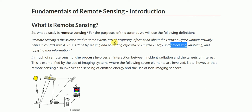So, remote sensing is the science of acquiring information about the earth's surface without actually being in contact with it. This is done by sensing or recording reflected or emitted energy, and then processing, analyzing, and applying that information.